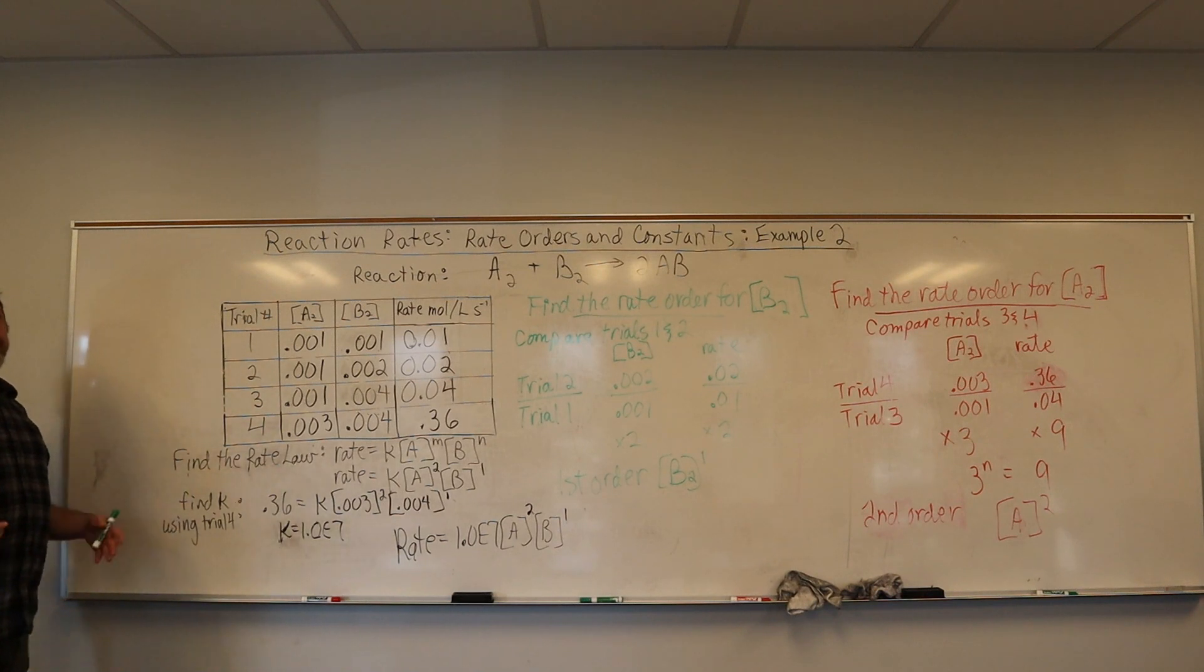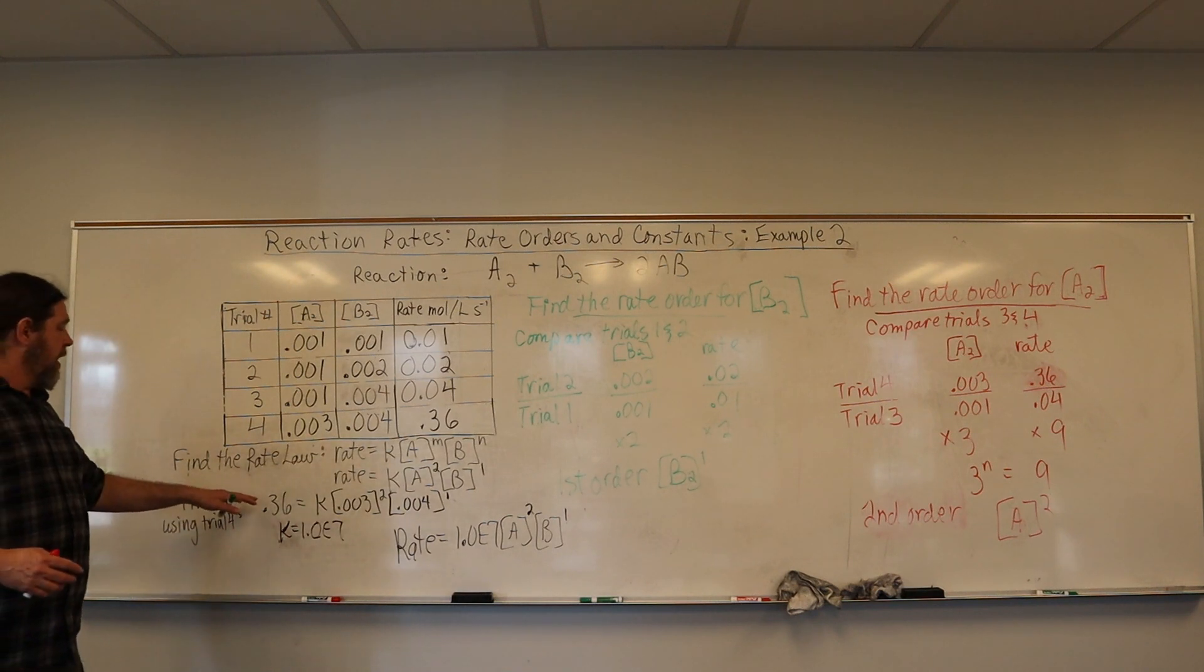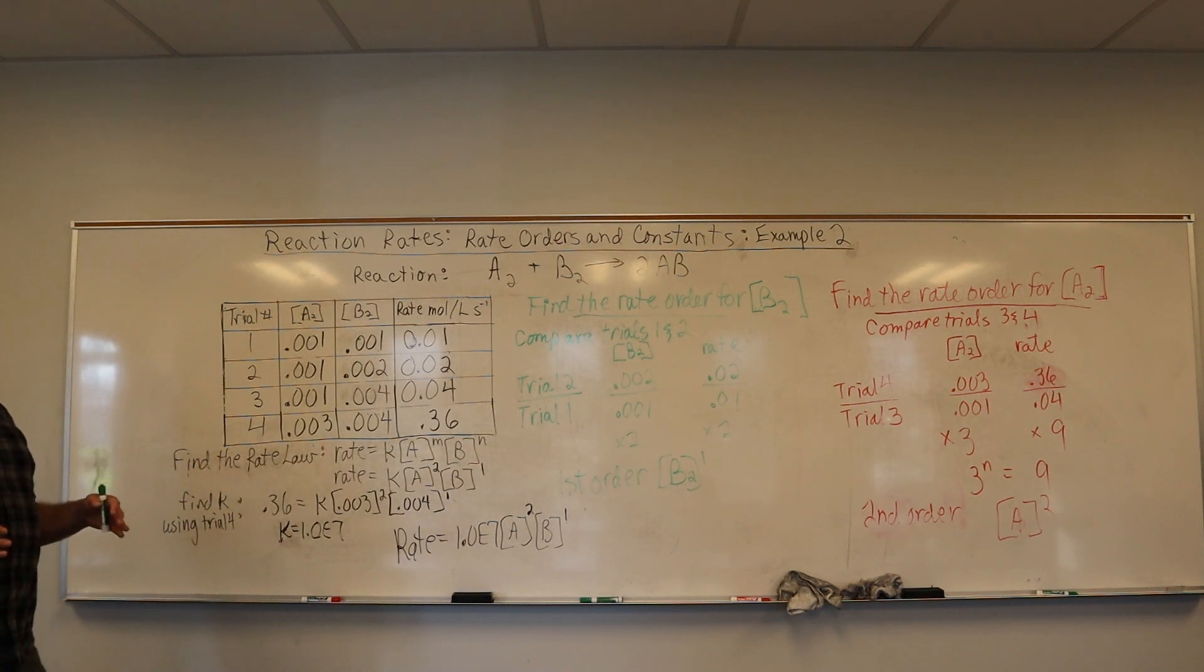Last video, I picked trial 1. This time I'll pick trial 4. It doesn't matter. It should not matter when you're solving for a constant, when you have experimental value data. If there is a constant to be found, any trial should work.